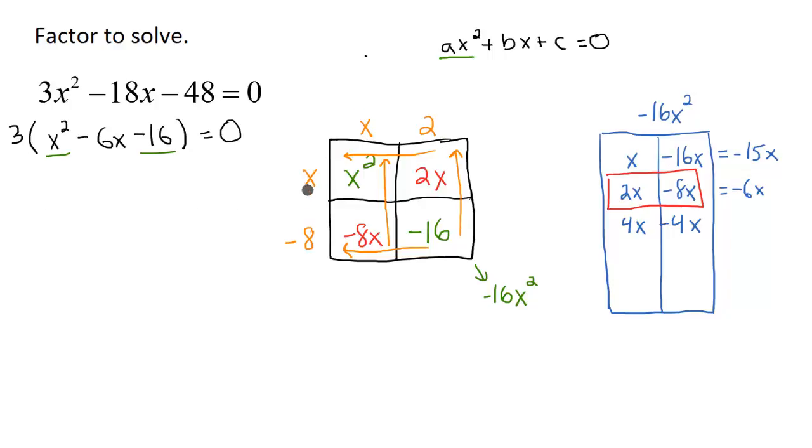So here x - 8 will be my first factor, and then x + 2 is going to be my second factor, still set equal to 0. And now if I set x - 8 equal to 0 and x + 2 equal to 0, I could solve. So by using the zero product property, I could figure out what my x is here.